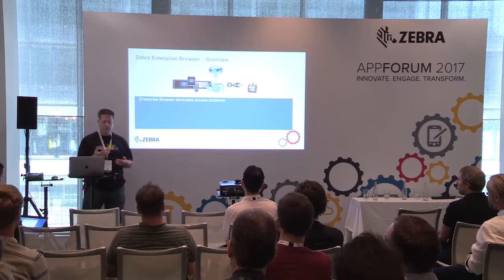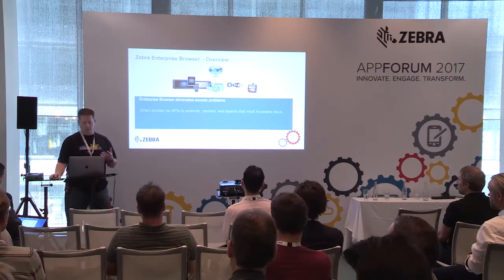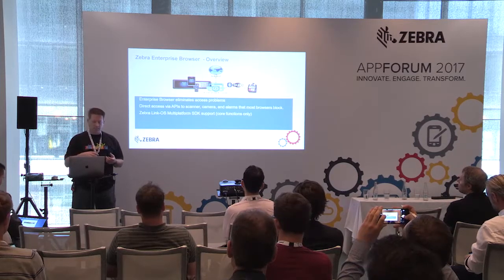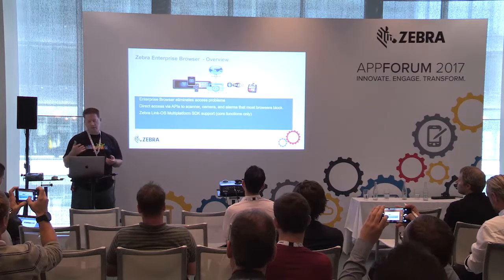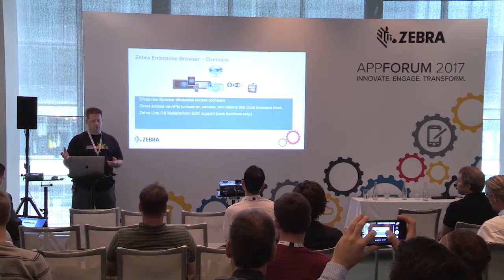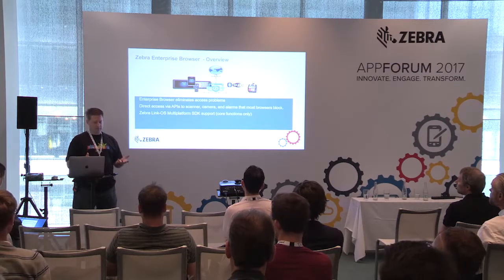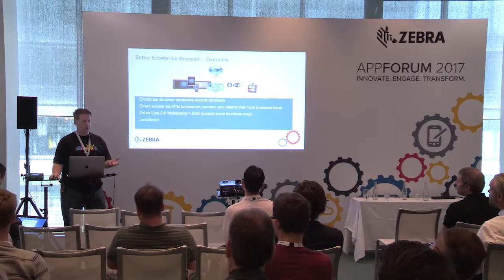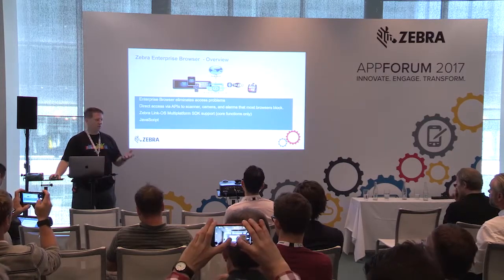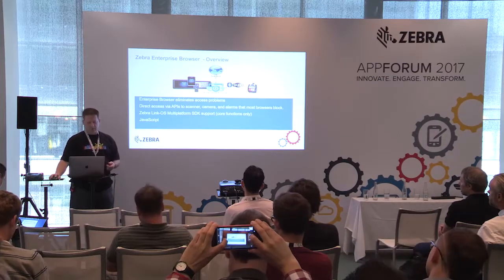The Zebra Enterprise Browser is made for mobile computers and gives you access to things a normal browser would not. You can integrate scanner, camera, and now the printer via the SDK, and you can access that through the Enterprise Browser. There's another session devoted to the Enterprise Browser, so I recommend checking that out if you need a browser-based solution. Your programming will need to be in JavaScript, and the Enterprise Browser will take care of getting your printing code to the printer via a direct connection using the SDK.